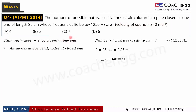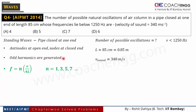For a pipe closed at one end: at the closed end, nodes are created; at the open end, antinodes are created. Only odd harmonics are generated — that is, only odd multiples of V/4L are created. So the frequencies are 1×V/4L (fundamental), 3×V/4L (3rd harmonic), 5×V/4L (5th harmonic), and so on. Even multiples are not produced in a pipe closed at one end — only odd multiples are created.